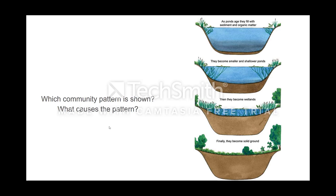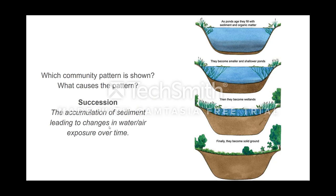Looking at the diagram here — what community pattern is being shown and what causes that pattern? You've got a pond that will gradually be filled up with sediment and organic matter, resulting in the pond becoming shallower and shallower, eventually becoming a wetland and then finally solid ground. The pattern being shown is succession. What causes that pattern is the buildup of sediment in that river over time — accumulation of sediment leading to changes in the water and the environment over time.